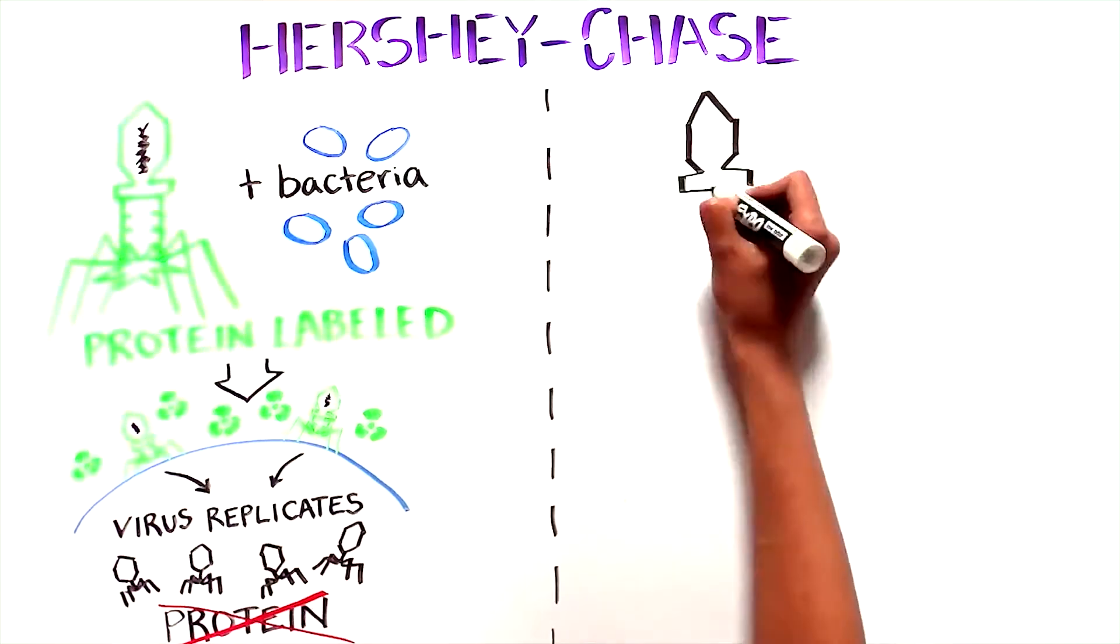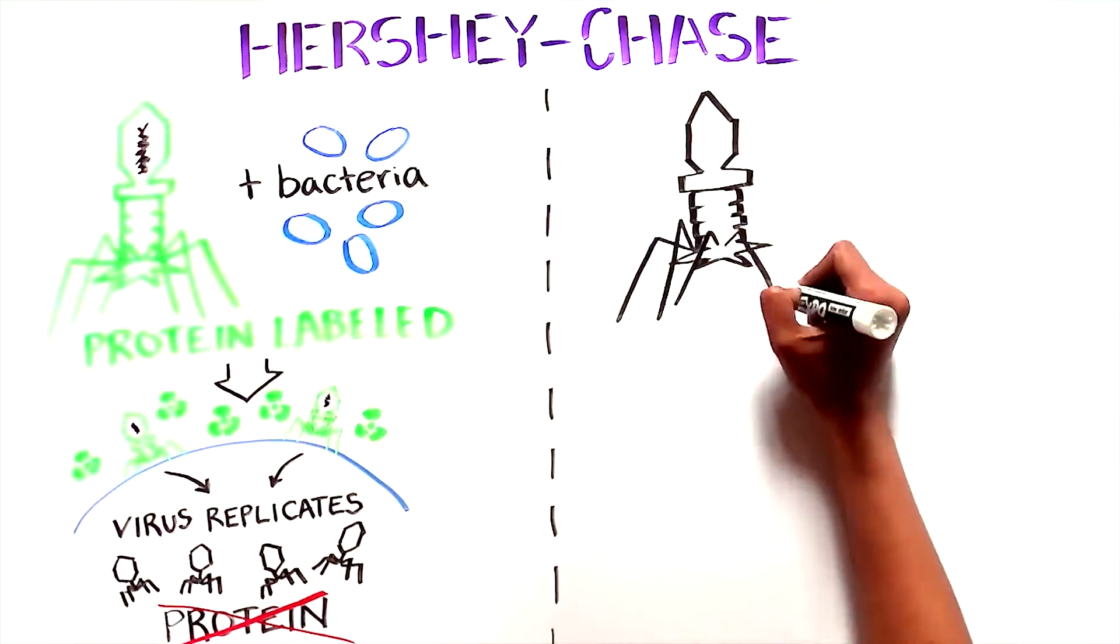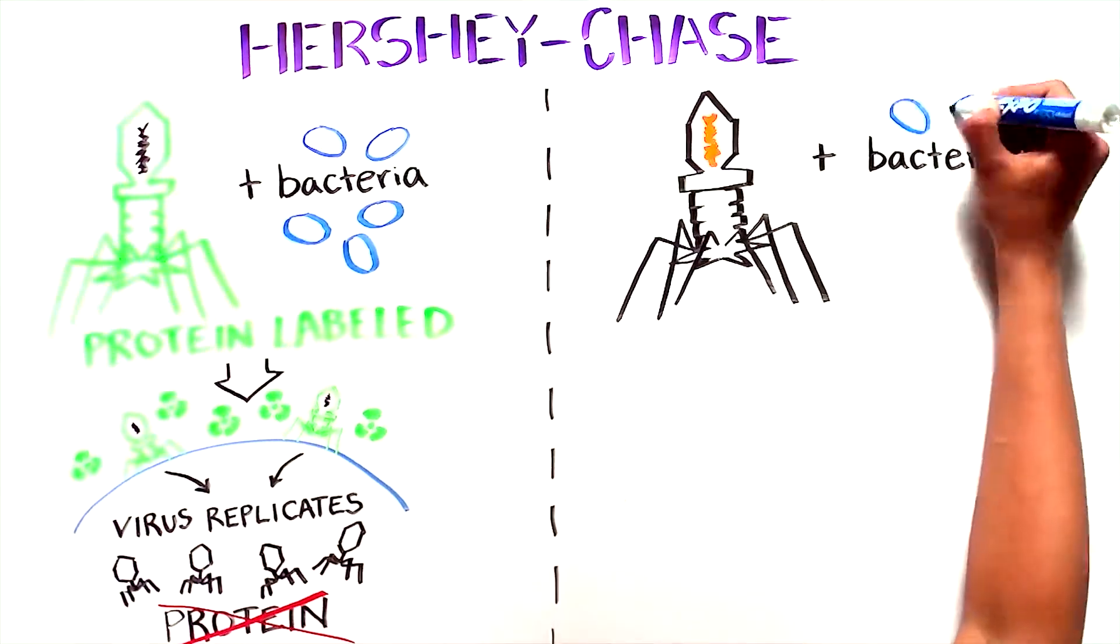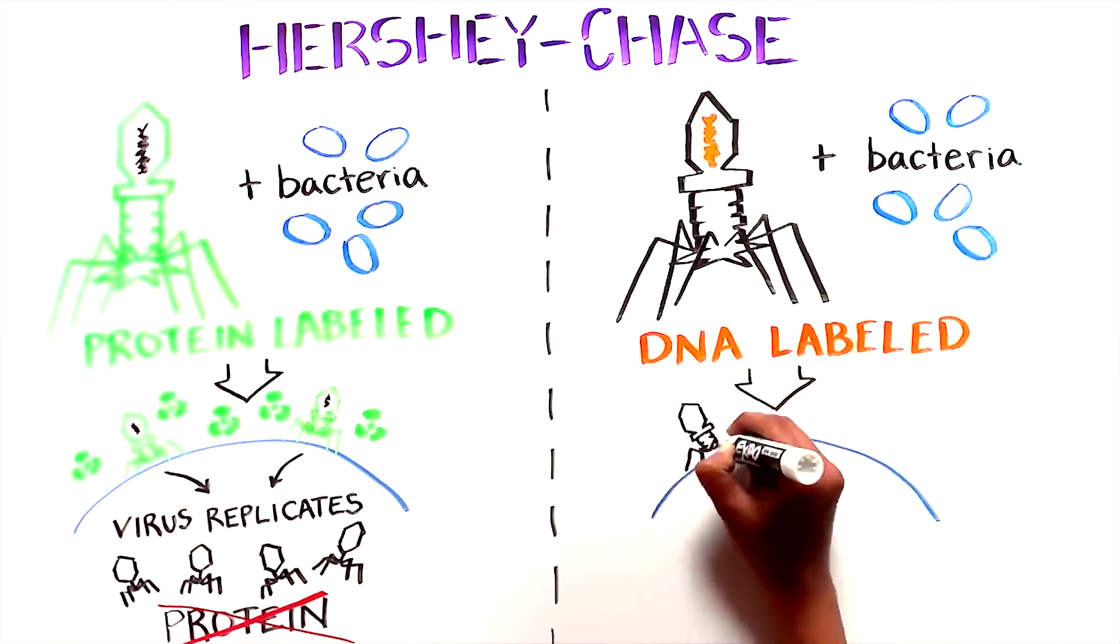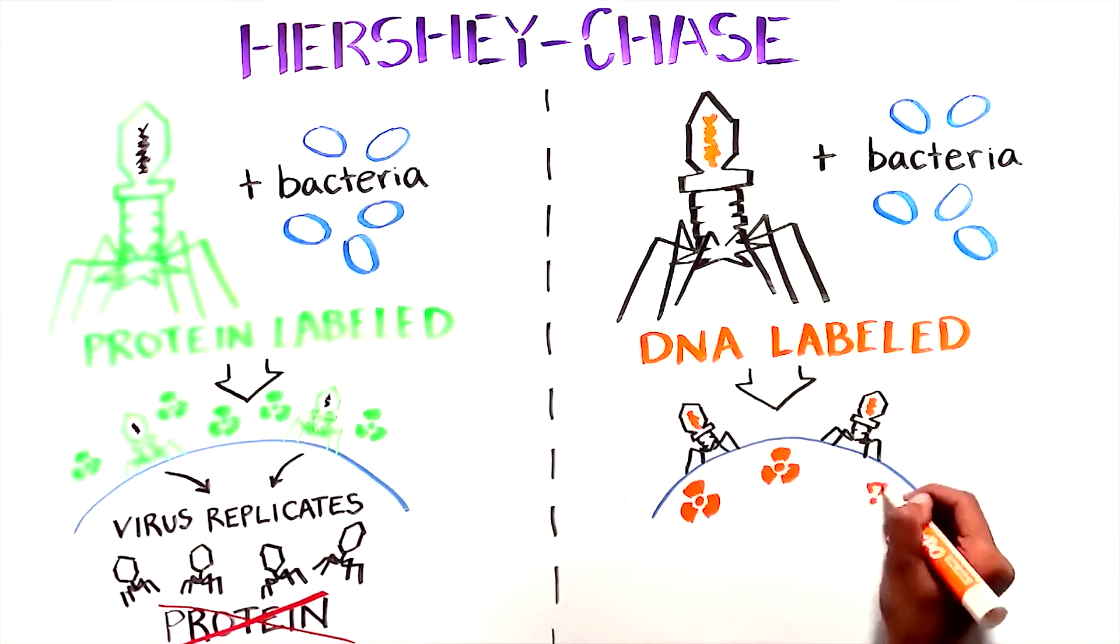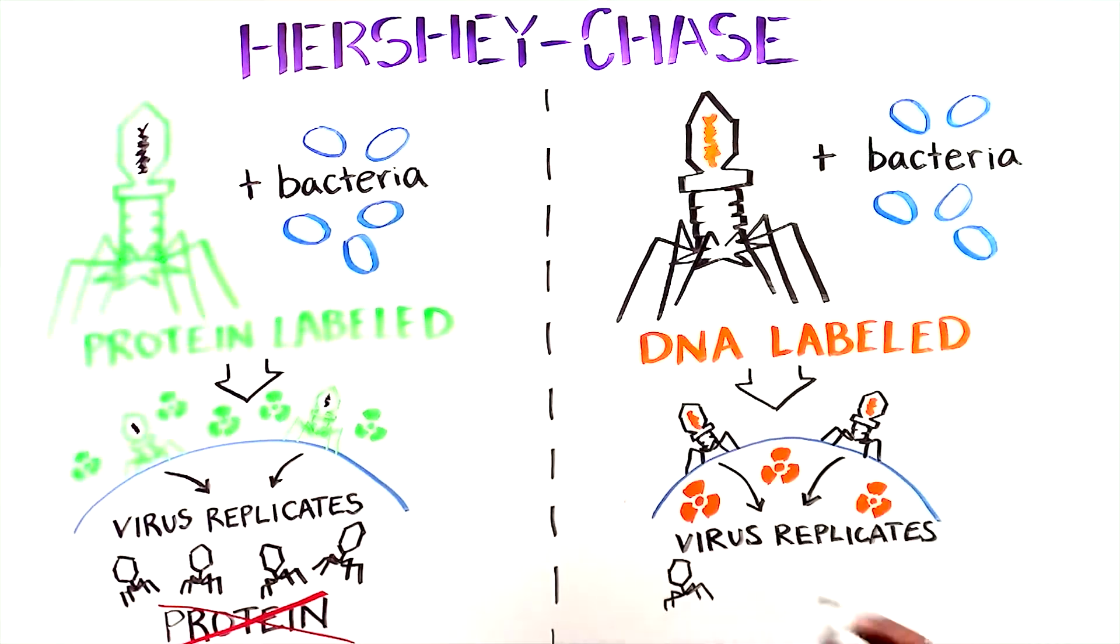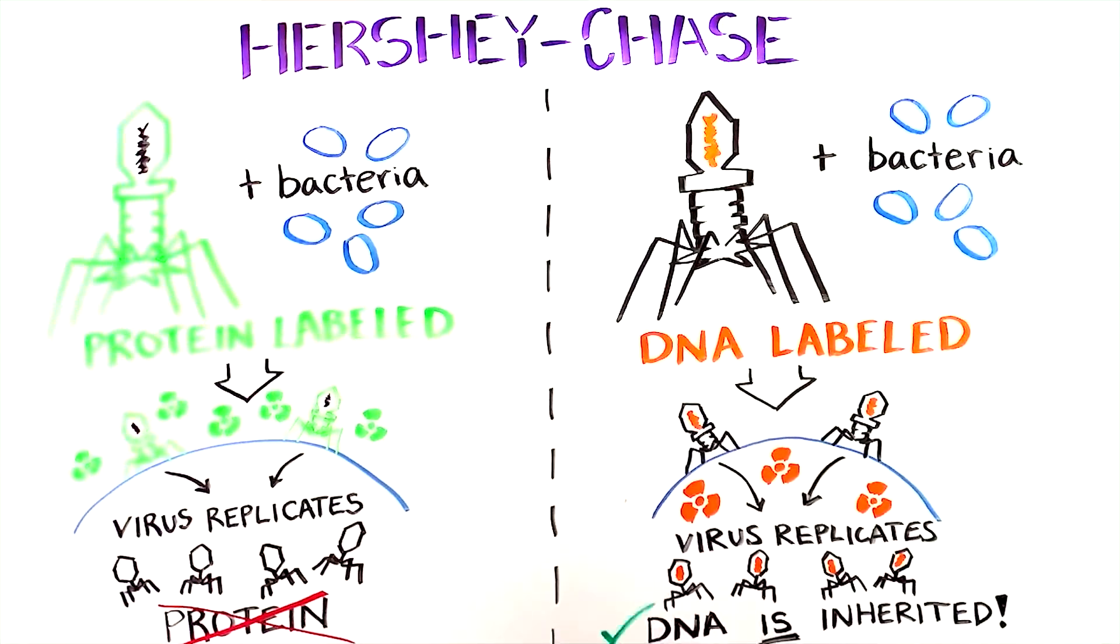On the other hand, when they performed the same experiment using virus with its DNA labeled with phosphate, they found that most of the radioactive DNA was injected into the bacteria from the attacking virus. And much of this labeled DNA was inherited and passed on to the new virus generation.